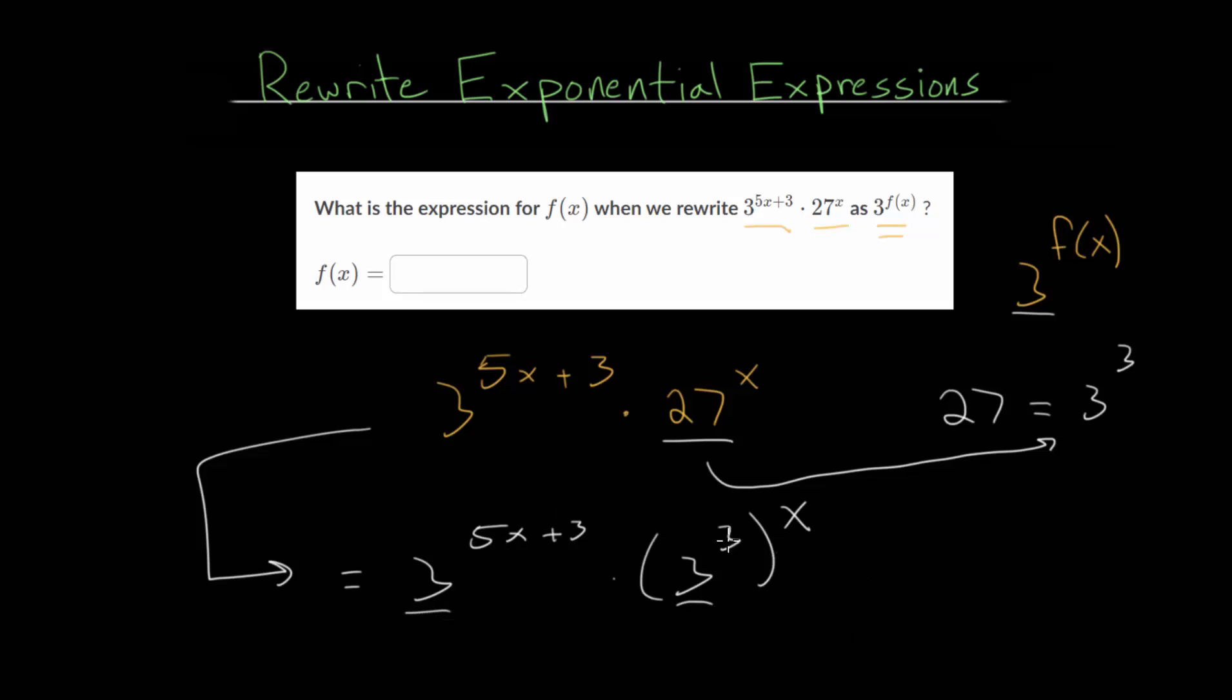First of all, we have an exponent raised to an exponent. And, remember, if we had x raised to the a power, and all of that was raised to the b power, that when you have an exponent to an exponent, you multiply the two exponents.